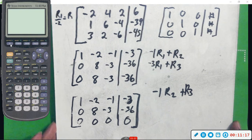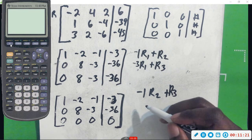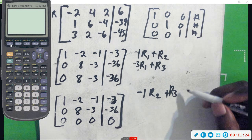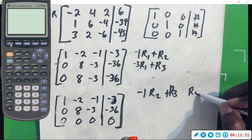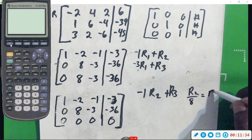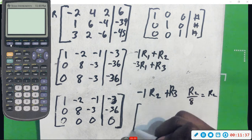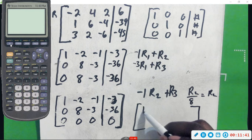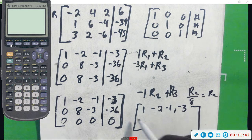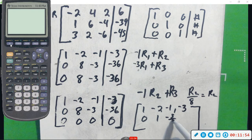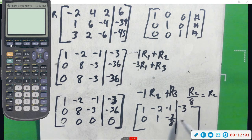Now we're going to divide row 2 by 8. Row 2 divided by 8 is going to be my new row 2. So here's my new matrix: row 1 is 1, negative 2, negative 1, negative 3. Then row 2 divided by 8 gives 0, 1, negative 3 over 8, and negative 9 over 2. And the bottom row was all zeros.